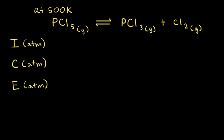Let's say we have a pure sample of phosphorous pentachloride, and we add the PCl5 to a previously evacuated flask at 500 Kelvin. The initial pressure of the PCl5 is 1.66 atmospheres. Some of the PCl5 is going to turn into PCl3 and Cl2. Once equilibrium is reached, the total pressure is measured to be 2.35 atmospheres.